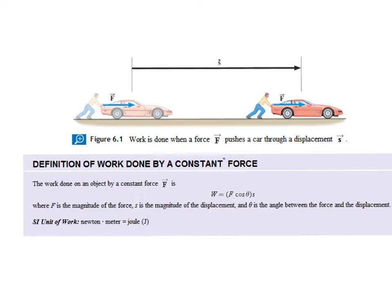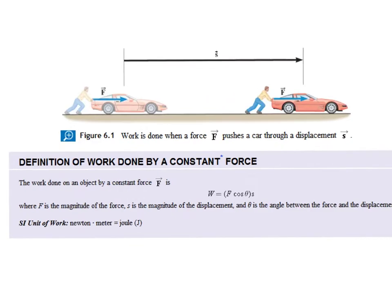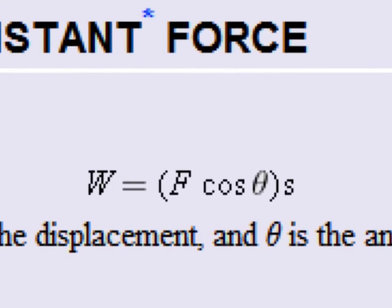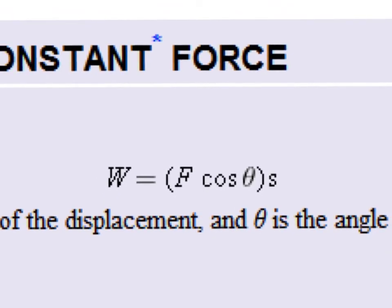In this particular picture, the person is applying a force in the same direction as the displacement of the car. But that's not always the case. So to correct for that, the actual equation that we're going to use for work is work equals force times distance times the cosine of the angle between the force and the distance. That's why this cosine is between force and distance.